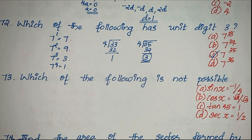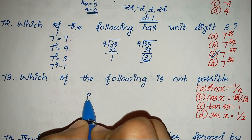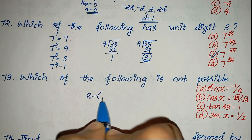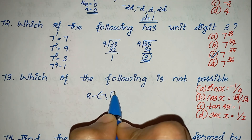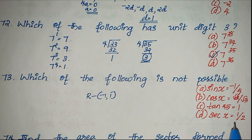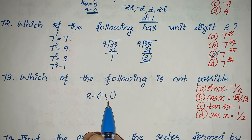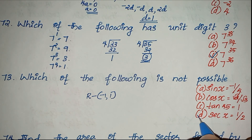Moving on to question number 73: which of the following is not possible? We seek an x value of 1/2. If you want to choose a value, you can select a sequence with one half. Because of the sequence, it is not possible. Option D is the right answer.